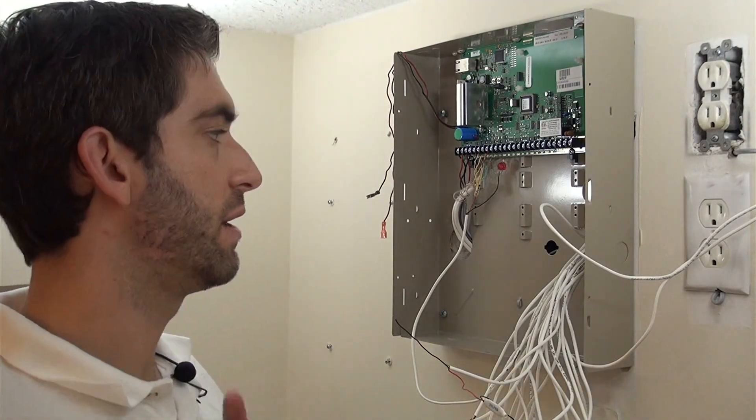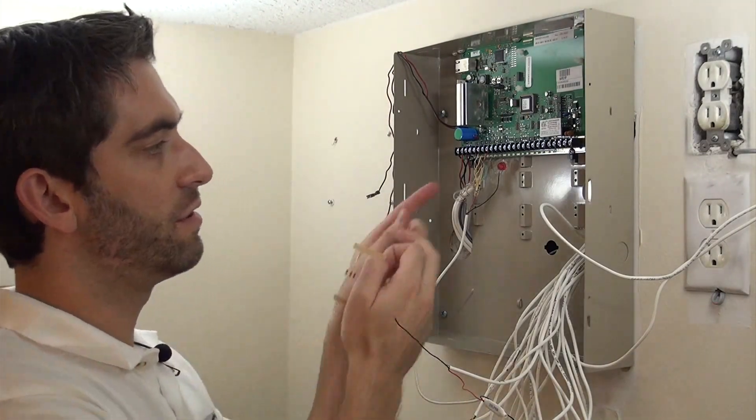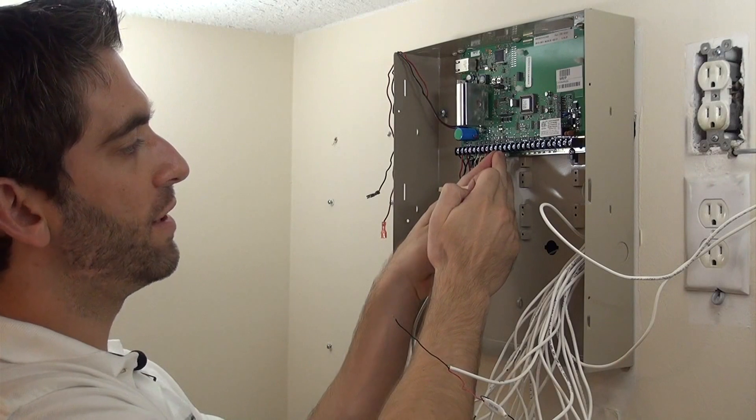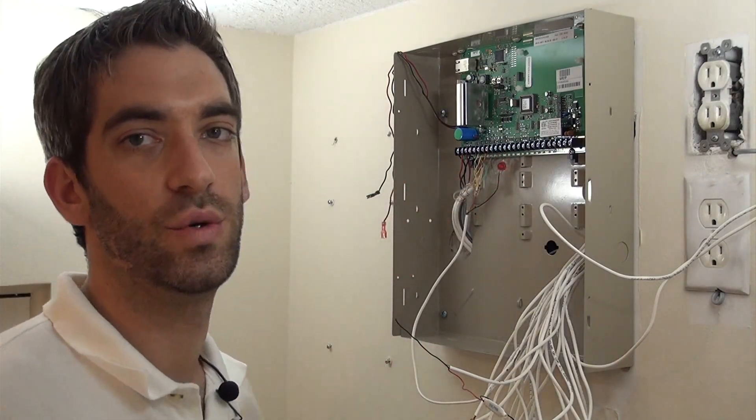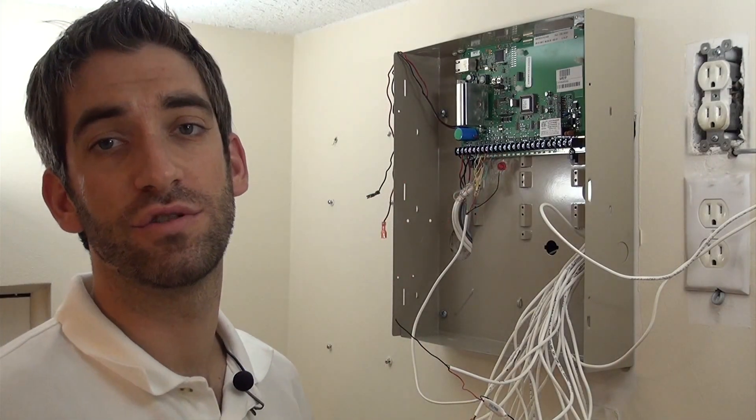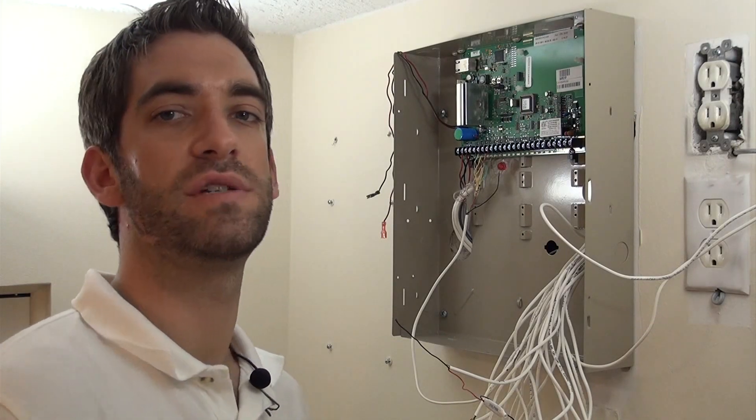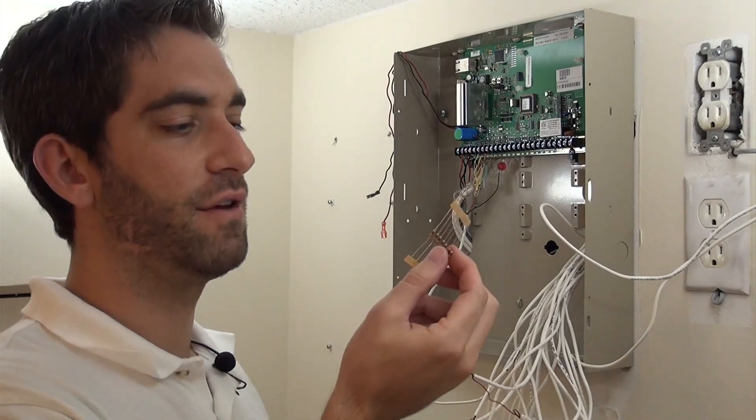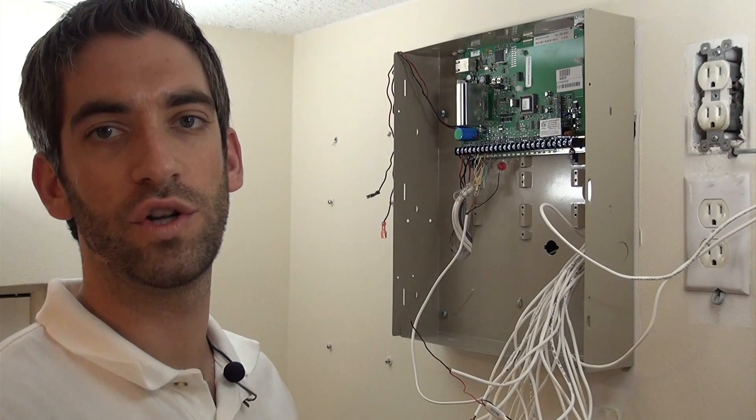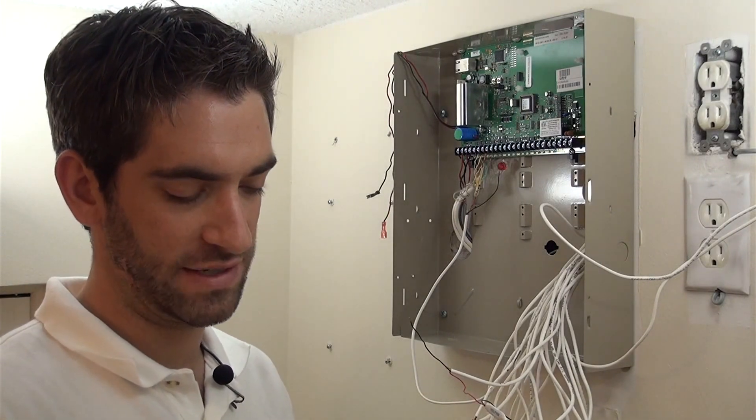So the way you do zone doubling, you're going to take two different zones and land them on one set of terminals, so ground and Z2. And the way it works is your zone 2 will also be your zone 10. And your different value resistor will let you know which device is actually going off.